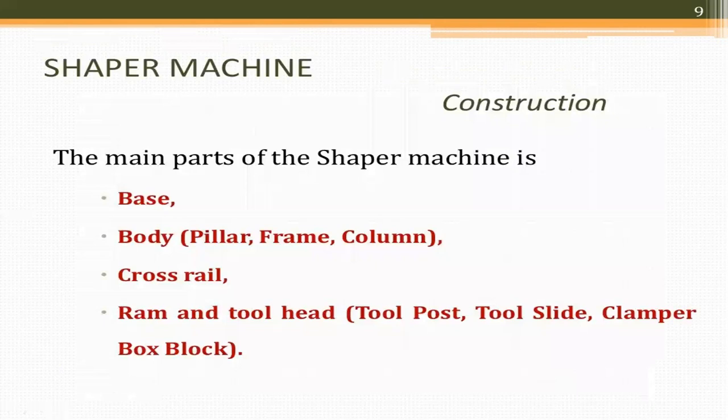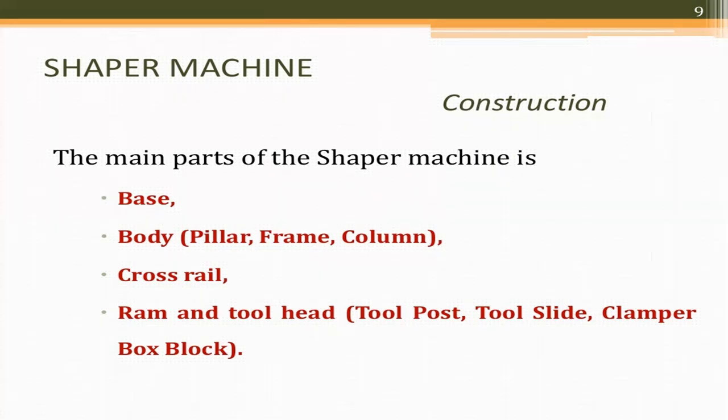The main parts of the Shaper machine are base, body, cross rail, RAM, and tool head. The base is made of heavy cast iron; it supports the body, frame, and the entire load of the machine, absorbing vibrations and other forces during operation. The body consists of pillar, frame, and column, mounted on the base. The top of the body provides a guiding base for the RAM and its front provides a guiding base for the cross rail.